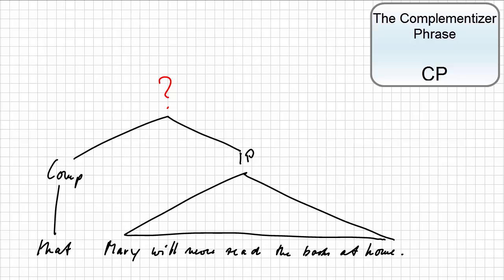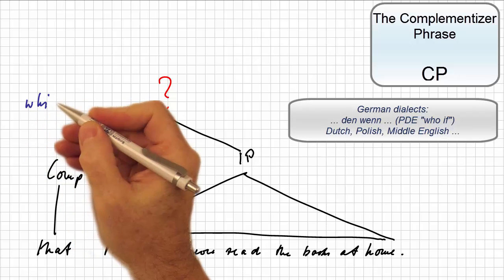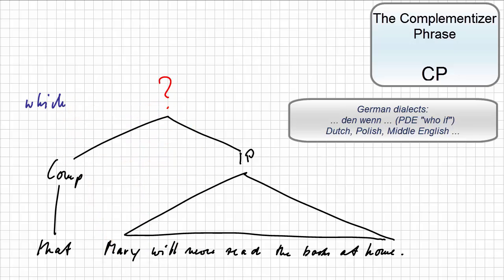For example, there are languages that have sentence-initial WH elements, such as in German dialects den, wenn, present-day English equivalent who, if, or Dutch, where forms such as which, that can be used.